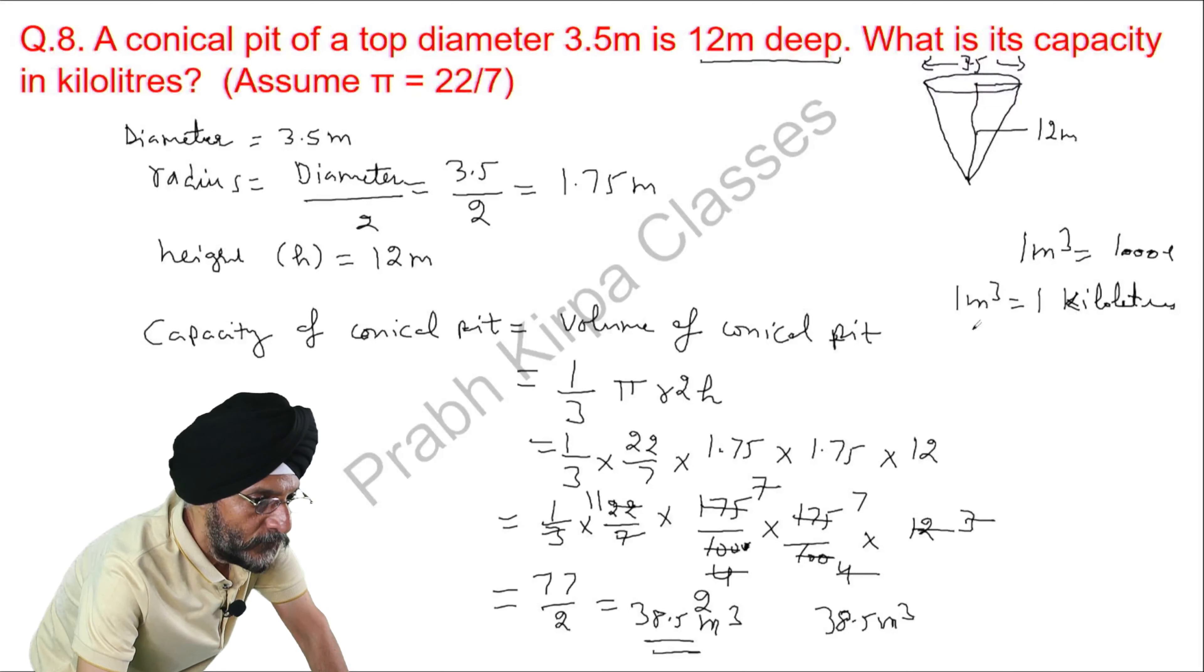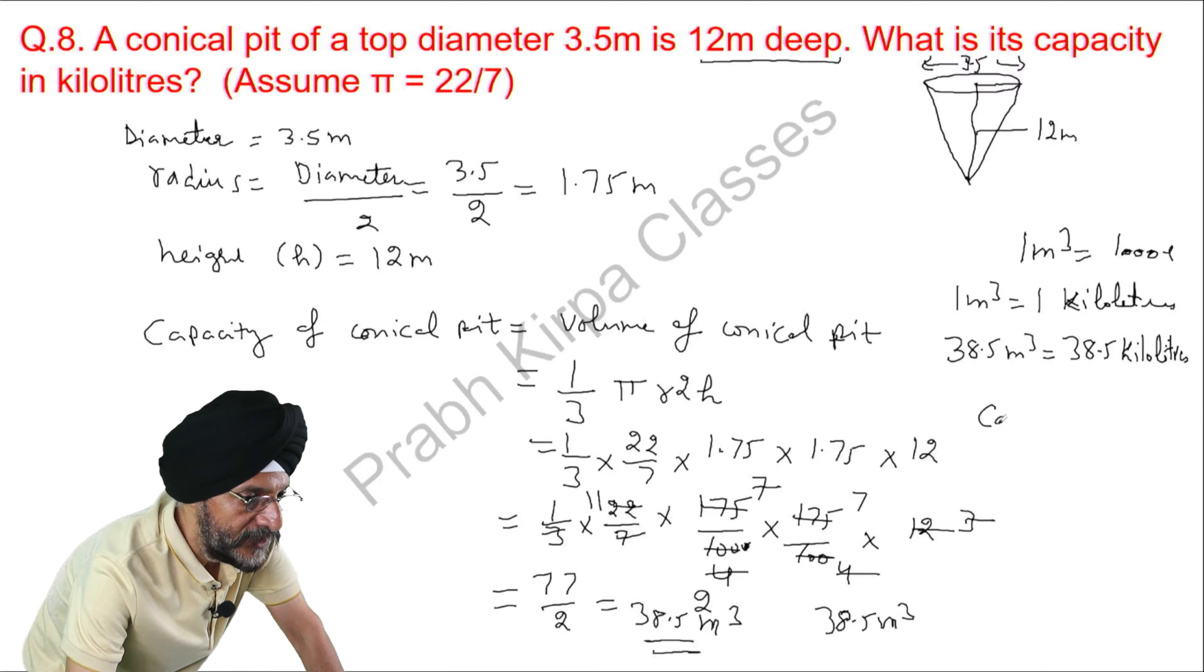So, 38.5 cubic meter is equal to 38.5 kilolitres. So, the answer is capacity is equal to 38.5 kilolitres. This is the answer.